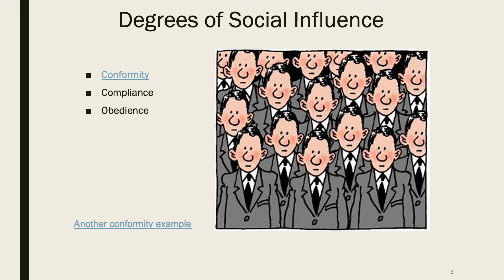Conformity is a very subtle form of social influence. Usually the people around us aren't explicitly asking us to do anything or giving us orders. We're just taking cues from their behavior as to how we should behave. This is different from compliance, which is what we do when we go along with a direct request from somebody to engage in a particular behavior or action.